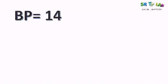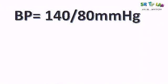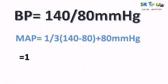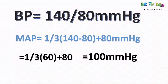Using our example where blood pressure equals 140 over 80 mmHg: MAP equals one third of (140 minus 80) plus 80, which is one third of 60 plus 80, and finally equals 100 mmHg. This is the mean arterial pressure of our patient.